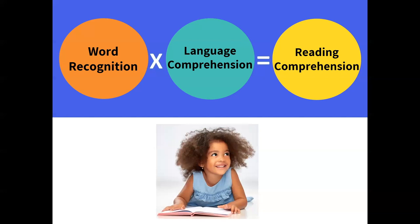Here we have an entering kindergarten student. She has been immersed in rich oral language and has very strong oral language skills, vocabulary, and developed background and content knowledge. But as a brand new entering kindergartner, she does not have the alphabetic principle mastered. So we give her a zero for word recognition and a full one for language comprehension. Because this is a multiplication problem, one side cannot bring up the other — at the end of the day, she still does not have any reading comprehension.